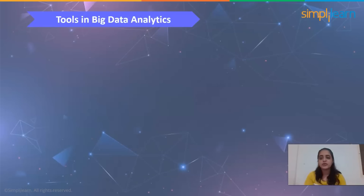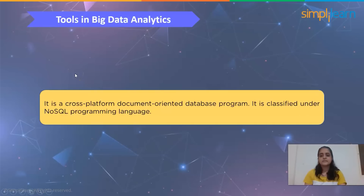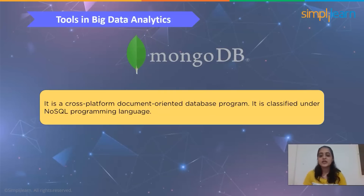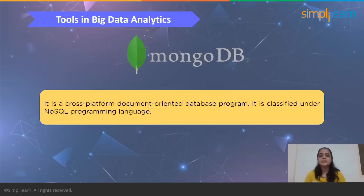MongoDB is an open source tool that supports data storage. It is a NoSQL document-oriented database used by Facebook and Google for data storage. MongoDB is best suited for big data where data manipulation is needed for the desired output. Some of its powerful features are CRUD operations, aggregation framework, text search, and MapReduce.